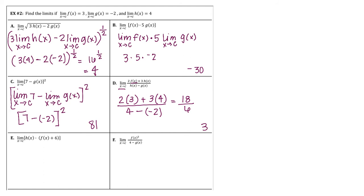For problem E, we have the limit as x approaches c of H of x, which is 4, times the limit of F of x plus 6. The limit as x approaches c of F of x is 3, and 6 is a constant so it stays 6. So we have 4 times 9, which gives us 36.